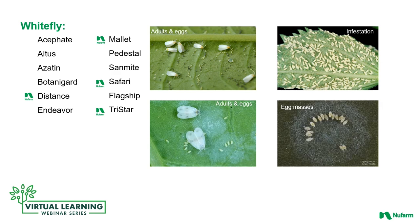Nothing is more irritating than watching a wave of whiteflies hovering over a crop. This pest is controllable with a rigorous program of systemic and contact insecticides. Class 4 insecticides such as Mallet, Safari, and Altus work long term with an initial drench at the beginning of production. If a late-season treatment is needed, a locally systemic spray like Tristar or Flagship, or a contact like Pedestal — which will prevent resistance issues — is required. Distance is again suggested for disrupting the life cycle and reducing insect pressure.